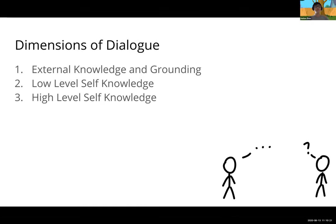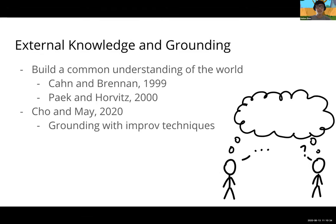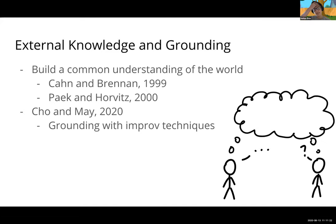Before talking about how we incorporate the social dimension, it's good to think about how other people have incorporated other dimensions into conversational agents. There's the idea of external knowledge and grounding — building a common understanding of the world. Justin and John recently published a paper using 'yes-and' responses from improv to encourage grounding in conversations. The corpus was yes-and examples from an improv podcast, and supervised learning on that corpus produces a model that tries to incorporate more grounding.